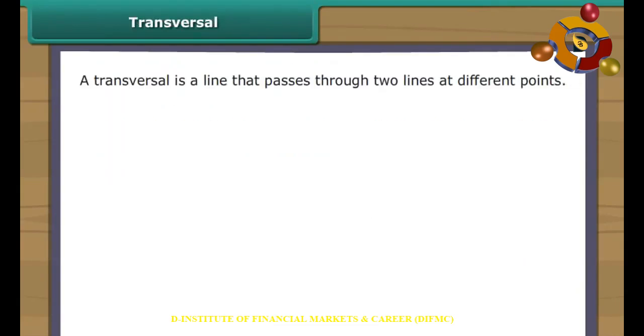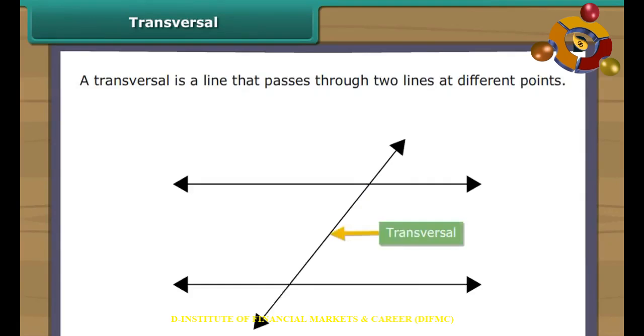Transversal. A transversal is a line that passes through two lines at different points. Mostly, a transversal produces several angles.